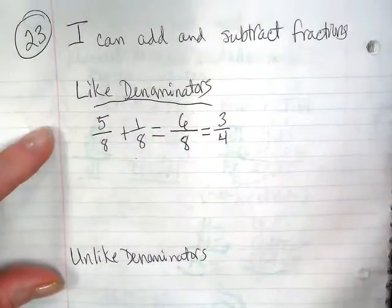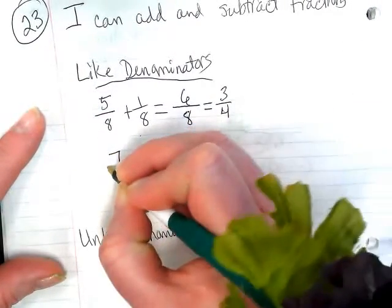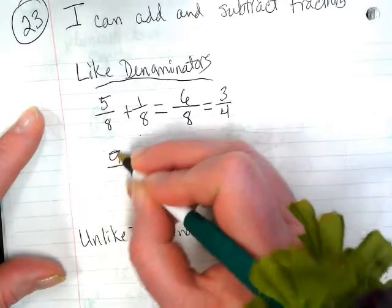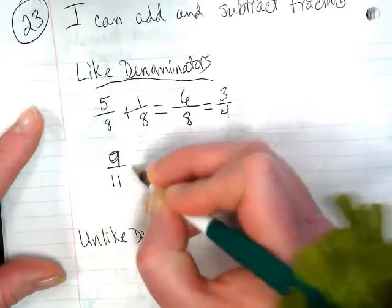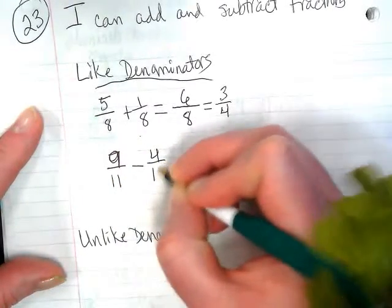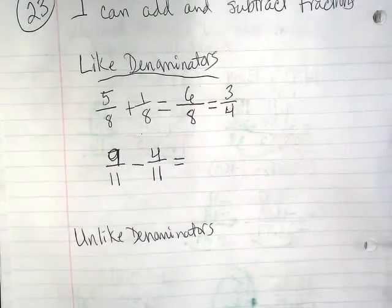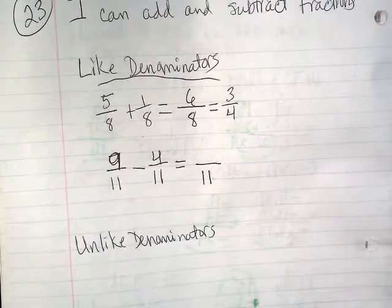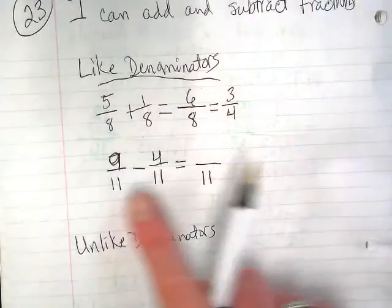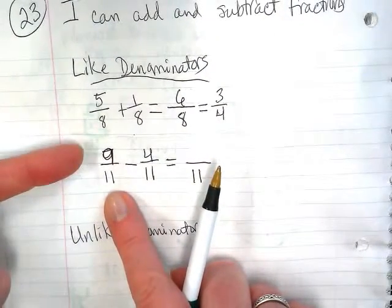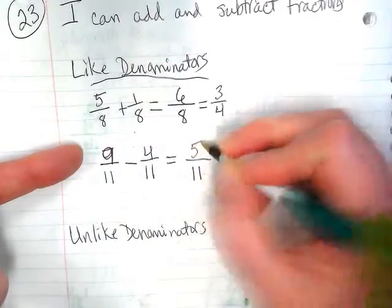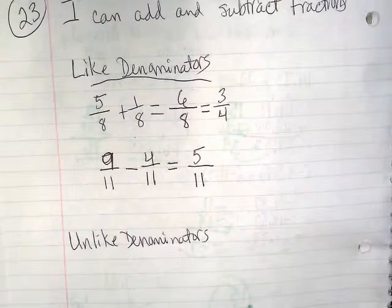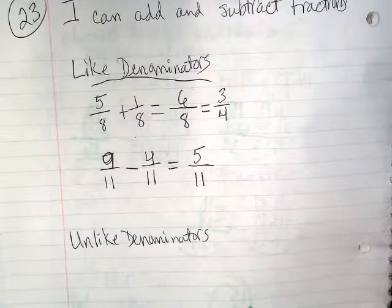What about when we subtract? Again, with like denominators, it's pretty simple. Actually, let's change that to a 9 over 11 minus 4 over 11. Working with like denominators, we're just going to keep the denominator the same. We have something cut into 11ths. There's 9 of them and we're taking 4 away. That's going to leave us with 5 over 11. We want to look at 5 over 11 and see if it can be simplified. Both 5 and 11 are prime numbers, so it can't be simplified, so we're done.